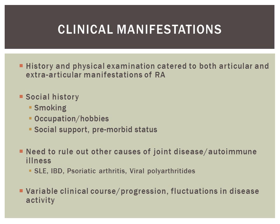Clinical manifestations. In approaching a patient with suspected rheumatoid arthritis, it is important to take a good history and physical examination, catered to both articular and extra-articular manifestations, as the patient may present with either one or both. It is also important to take a thorough social history, including the patient's smoking history, as well as her occupation and hobbies. As the disease can be chronic and quite debilitating, it is important to know what the patient's social support is like, as well as her pre-morbid status, as this will help to cater your further management.